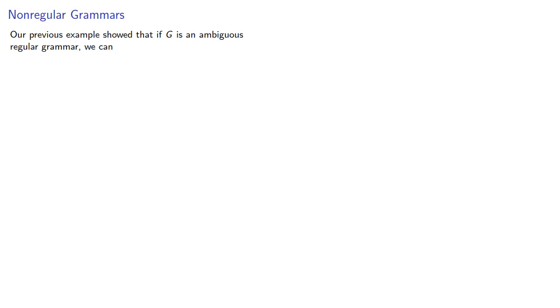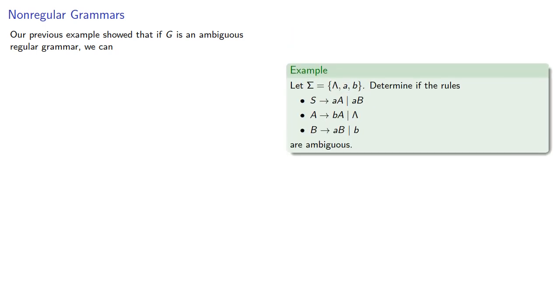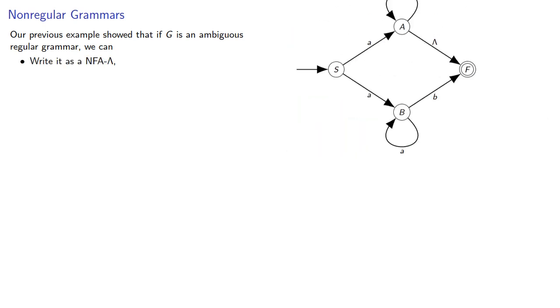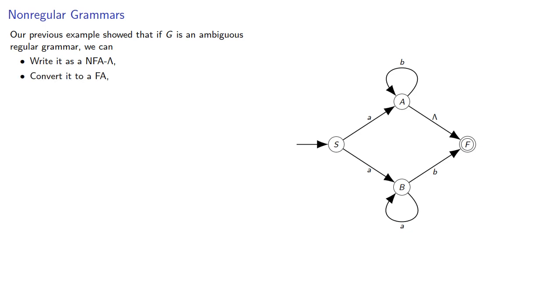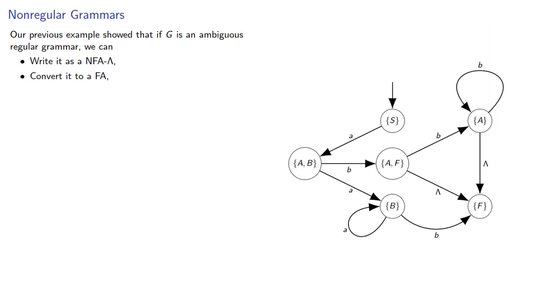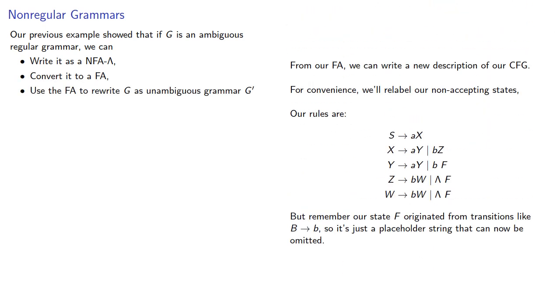Our previous example showed that if G is an ambiguous regular grammar, we can write it as an NFA, convert it into a finite automaton, and use the finite automaton to rewrite G as an unambiguous grammar.